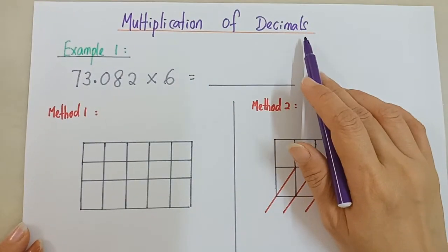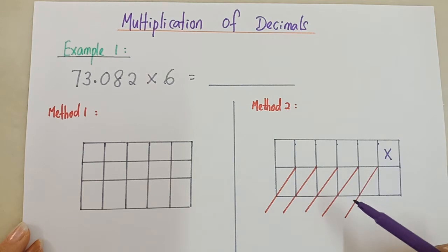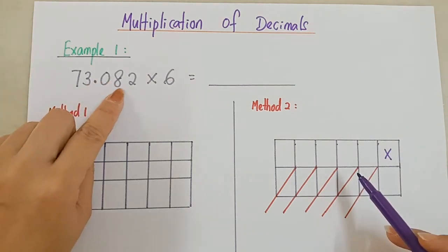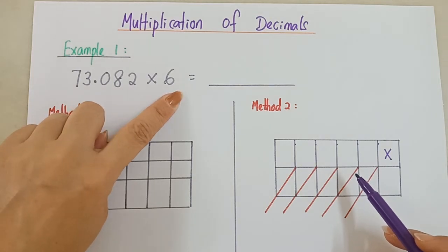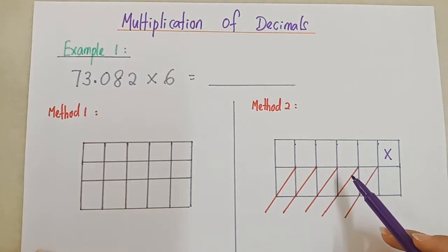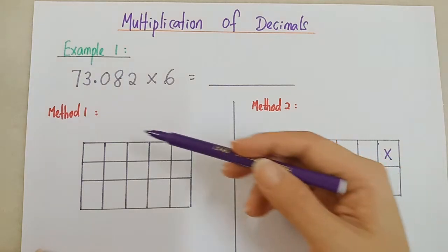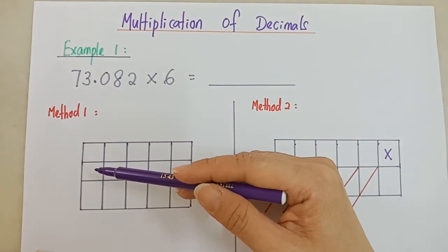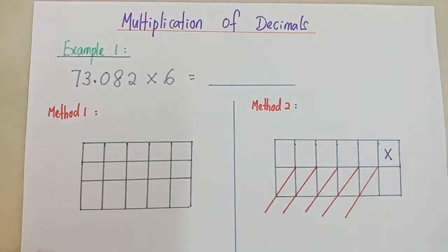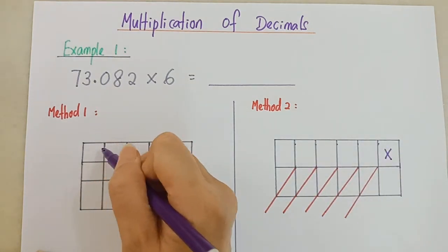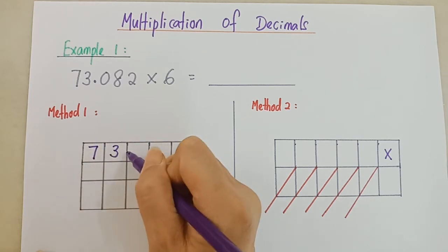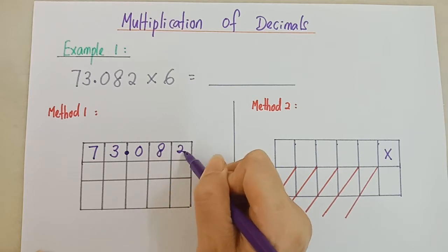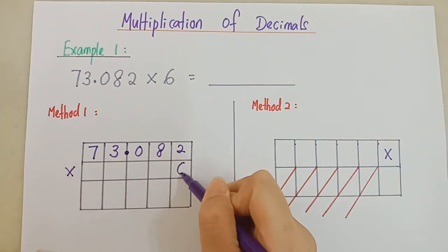Multiplication of decimals. Look at example 1: 73.082 times 6. Now I show you with method 1, that is the normal standard written method. You write like this: 73.082 times 6.